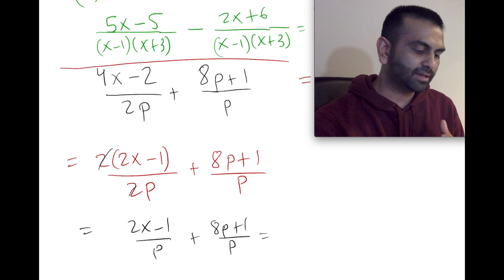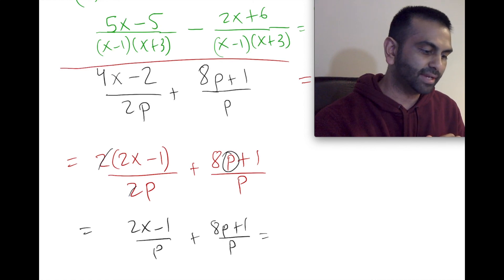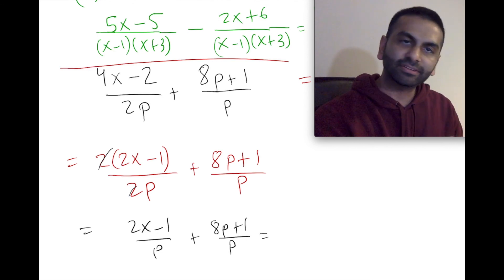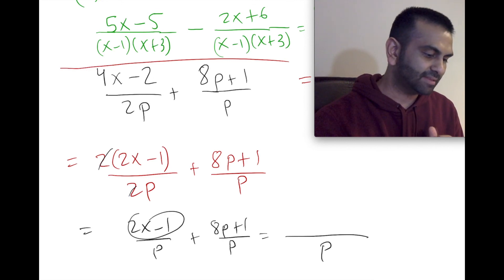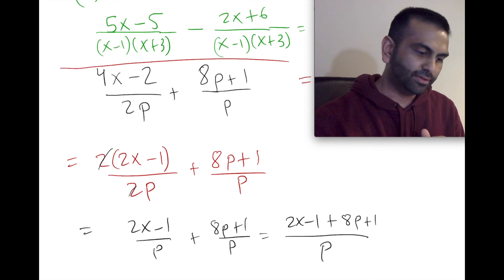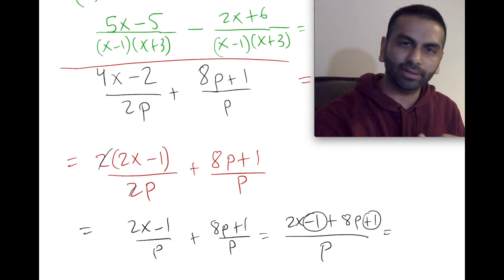Notice it might be tempting to cancel the p's in the second term, but you can't because this p doesn't apply to this other term. Now that we have the same denominator p, the final answer will have that same denominator p, and the numerator is (2x minus 1) plus (8p plus 1). You could simplify that a little bit because the negative 1 and the plus 1 cancel each other out, so we're left with 2x plus 8p over p, and that's your answer.